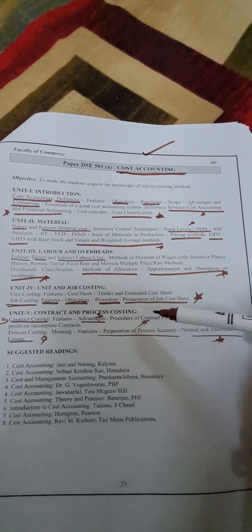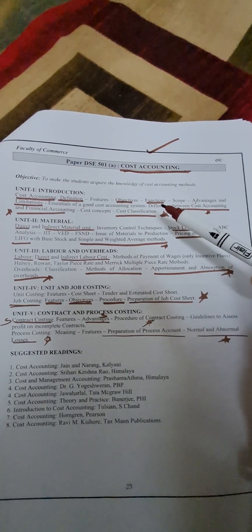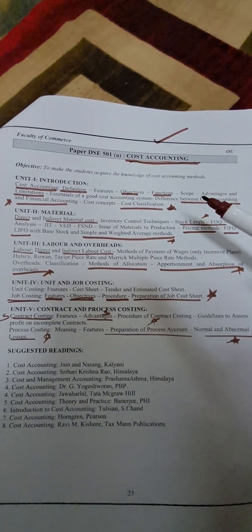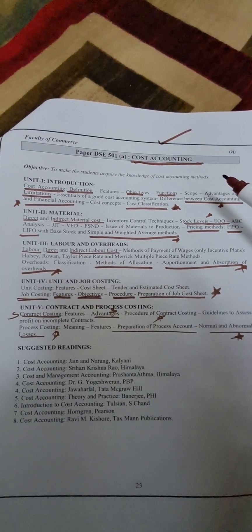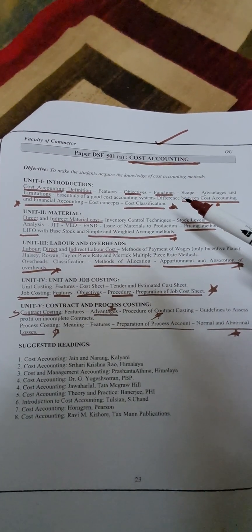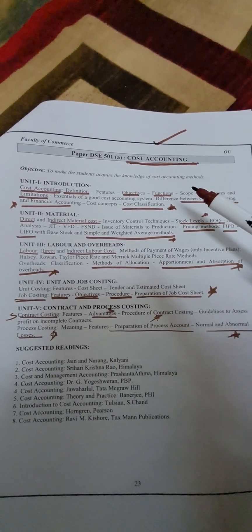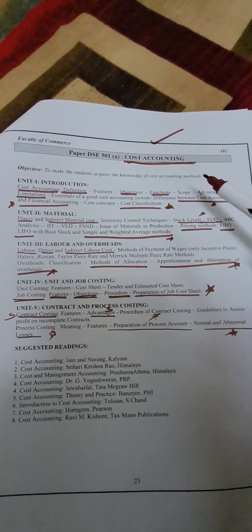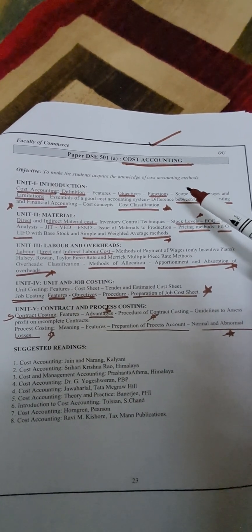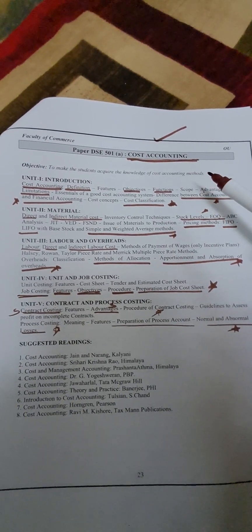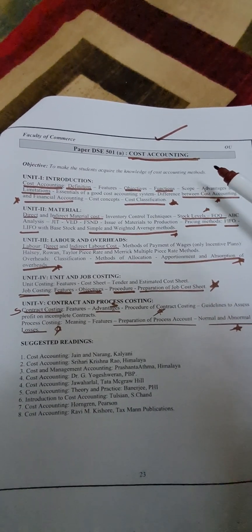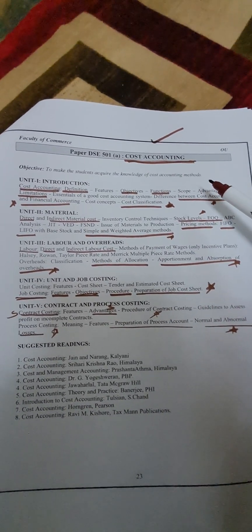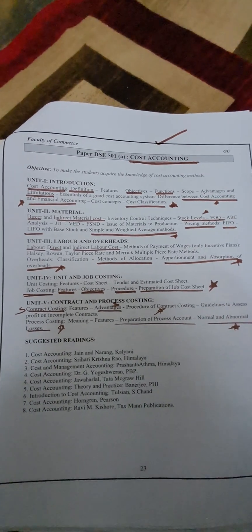We are going to discuss each and everything in detail. We have five units in cost accounting and for each unit I have important questions to discuss. Try to find out what is best for you to learn and what to leave — this will help you get good marks, 90 plus marks.